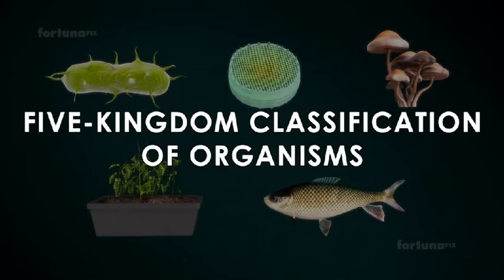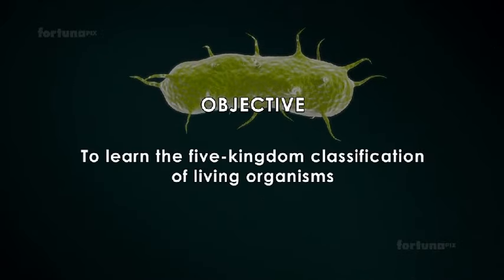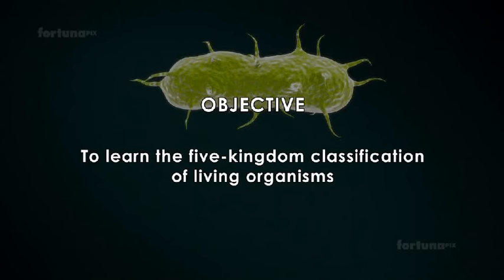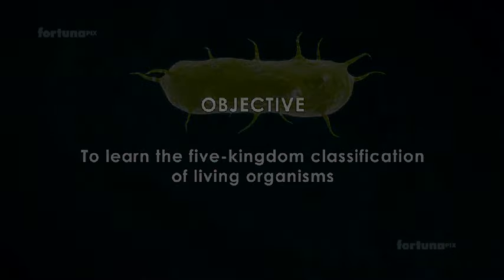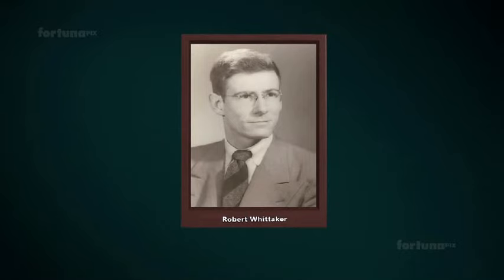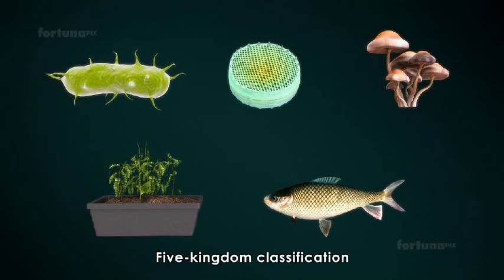Five Kingdom Classification of Organisms. Objective: to learn the Five Kingdom Classification of Living Organisms. In 1969, ecologist Robert Harding Whittaker divided all living organisms into five categories, commonly referred to as the Five Kingdom Classification.